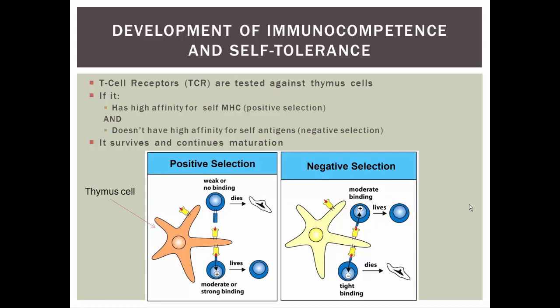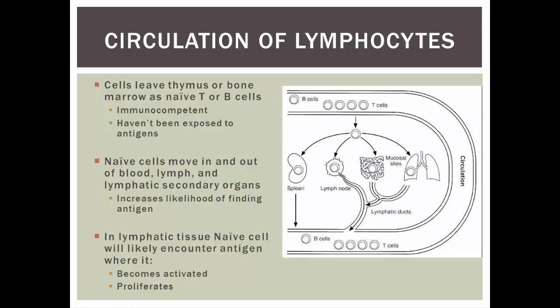The graduation rate in this school is very, very low — only 2% of the students entering the thymus school of lymphocyte education actually graduate. Once they graduate, we call them naive T cells or B cells. A similar process is thought to occur in the bone marrow with B cells, though the exact tests aren't fully understood. These naive cells haven't been exposed to an antigen yet — their immunocompetence means they will mount an immune response when exposed, but they're fresh out of boot camp and haven't entered the war yet.